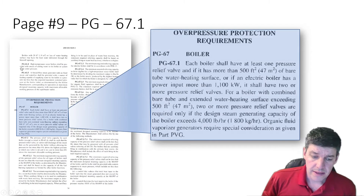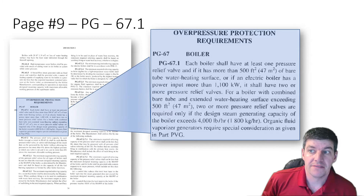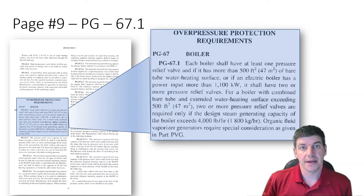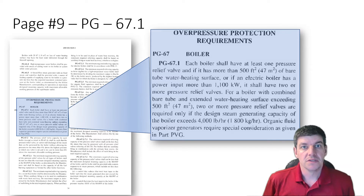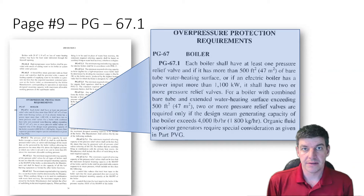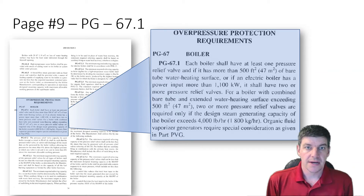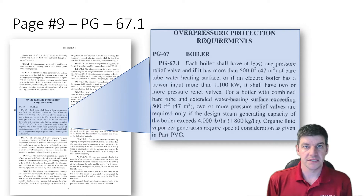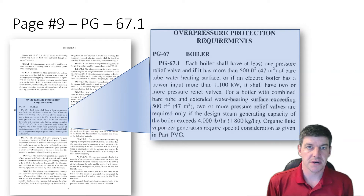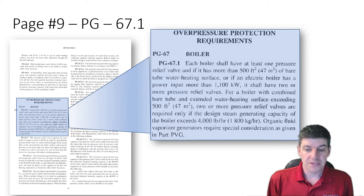In your package, you have page number 9, which has PG-67. Recall we were in the 20s before doing our pressure part calculations, so we've skipped ahead a few pages to PG-67. This section talks about your safety relief valve.